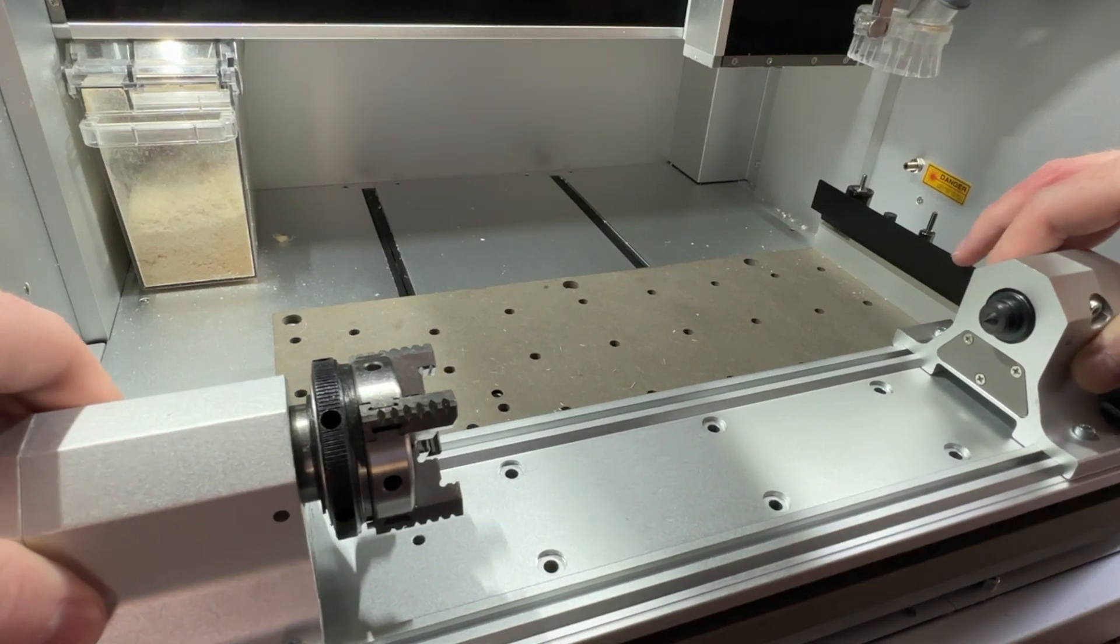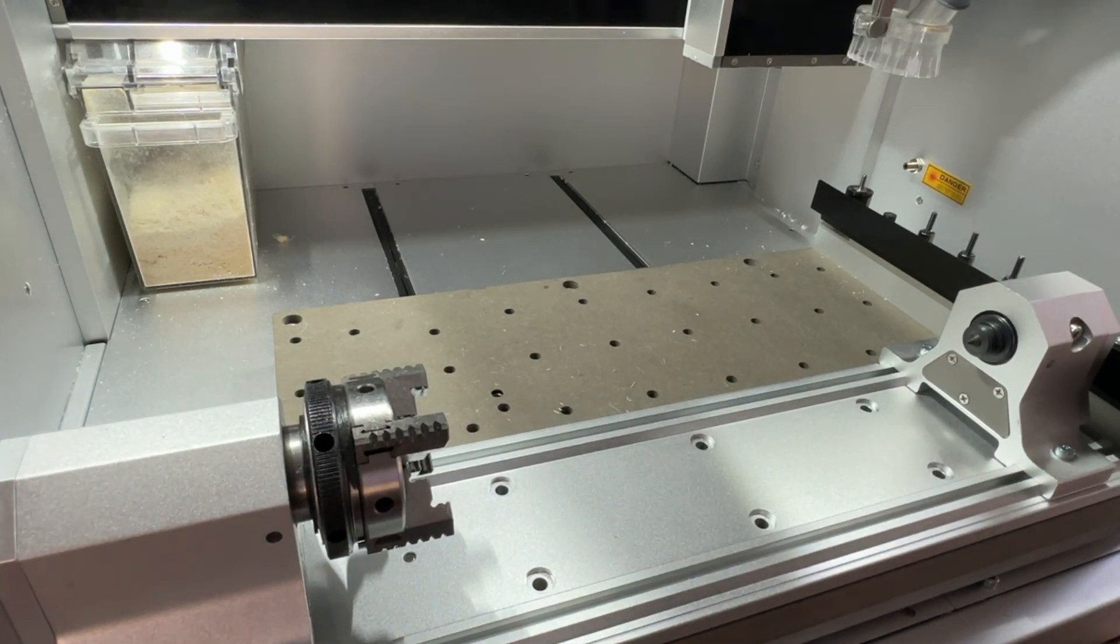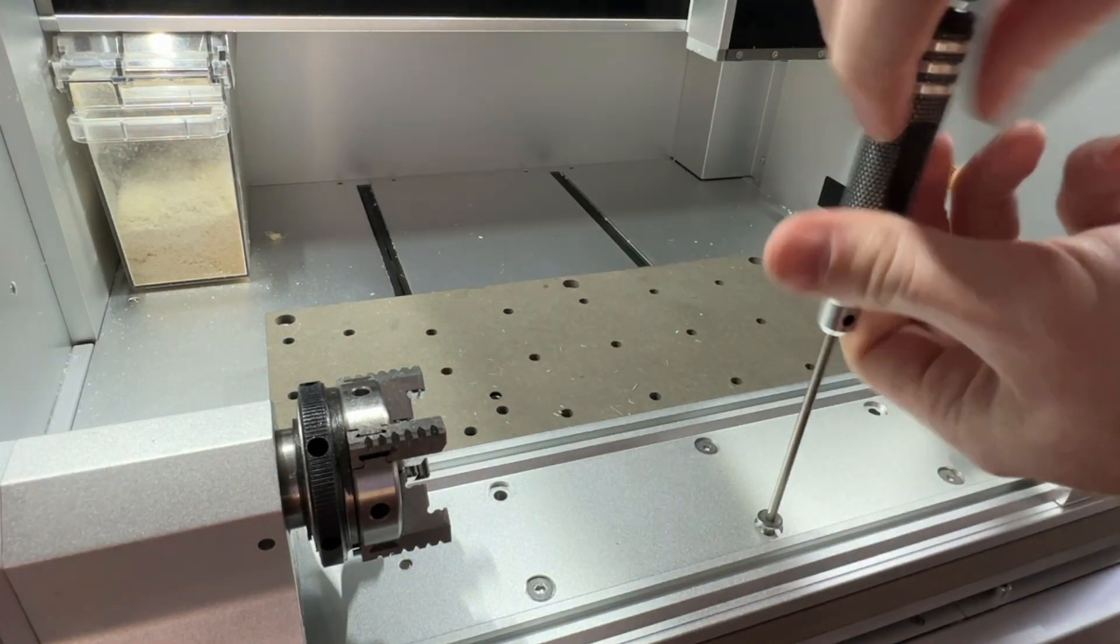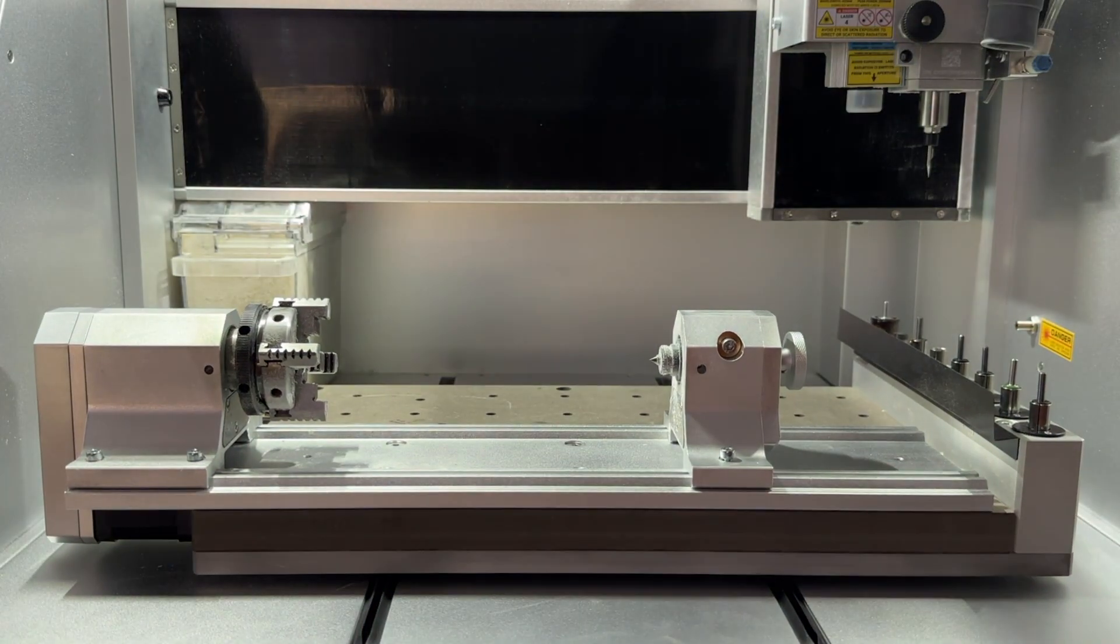Carefully lower and align the module with the dowel pins while ensuring that the plug for the module is not caught between the module and the bed. Next, secure the module in place using six M5 by 20 screws. Lastly, power on the Carvera to reset and configure the 4th axis.